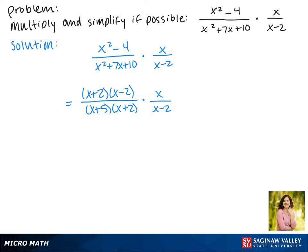So now it's time to simplify and see if we can see any common factors between the top and the bottom. There's an x plus 2 and an x plus 2 on the top and bottom. There's also an x minus 2 and an x minus 2 that we can cancel.